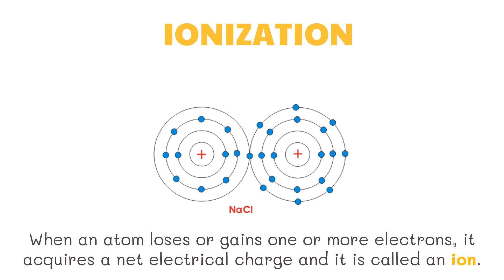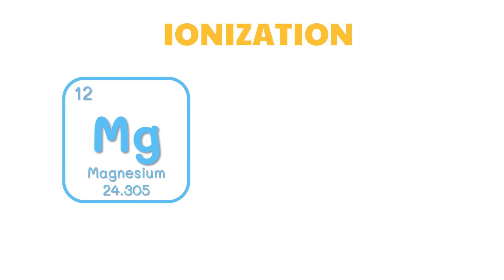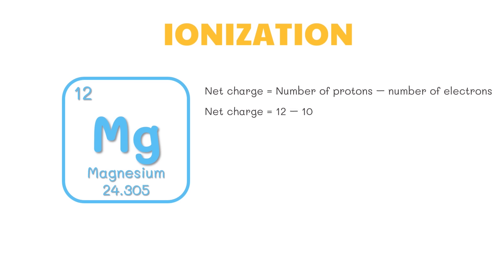When an atom loses or gains one or more electrons, it acquires a net electrical charge and is called an ion. For example, a neutral magnesium atom has 12 protons and 12 electrons. If the magnesium atom loses two electrons, it will have a net electrical charge of positive two. To find the net charge of an ion, subtract the number of electrons from the number of protons: 12 protons minus 10 electrons equals a net charge of positive 2. A magnesium ion is represented with the symbol of magnesium with a charge of positive 2.